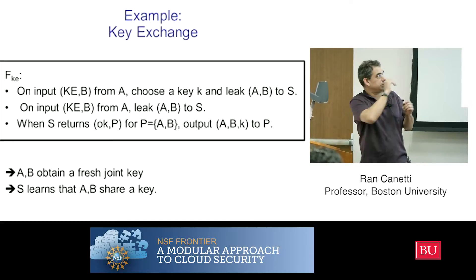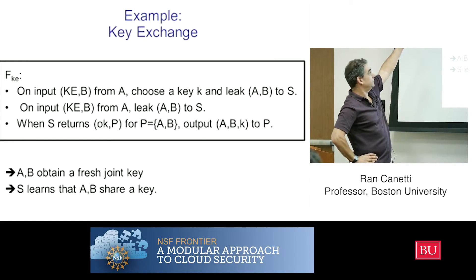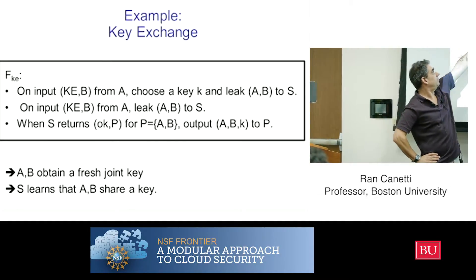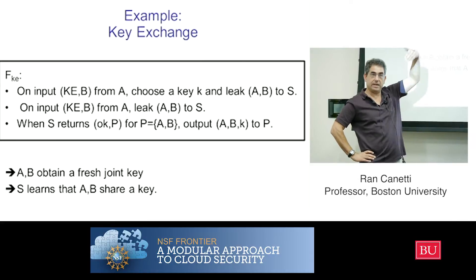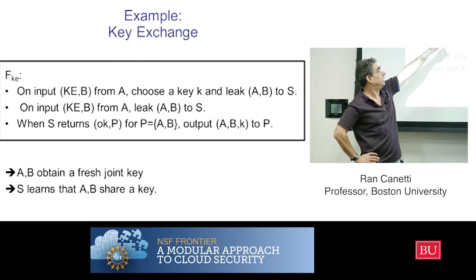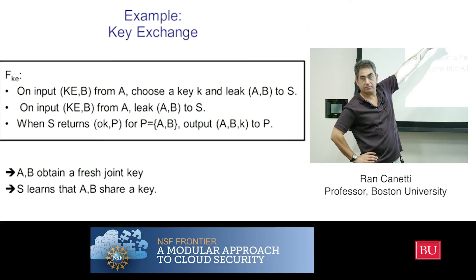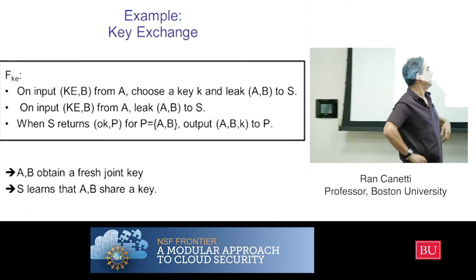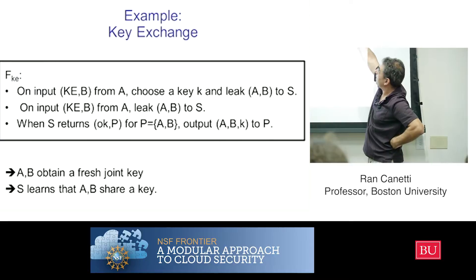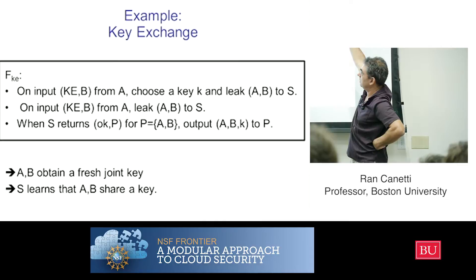Key exchange, you already talked about a little bit. But here it is again. So you get input from A—the service gets on the A channel an input saying I want to exchange a key with B. And what it's going to do, when it gets something from A, the service is going to choose a key randomly and tell the simulator that—it doesn't tell the key, but it tells the simulator that A wanted to exchange a key with B. Because it doesn't hide the fact that this key was exchanged.